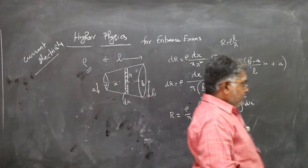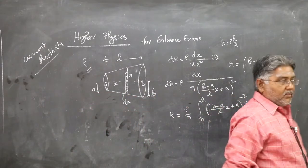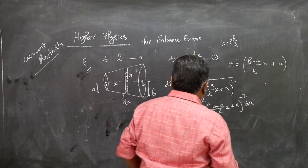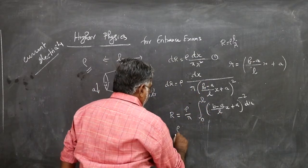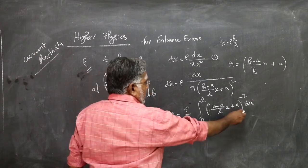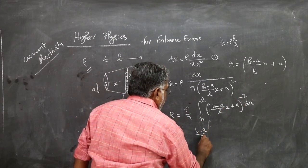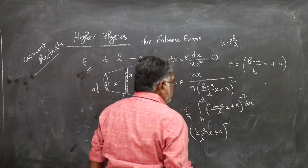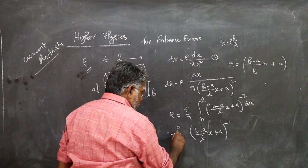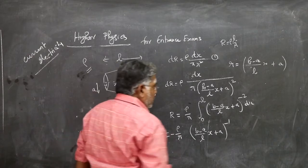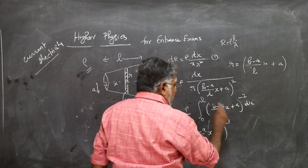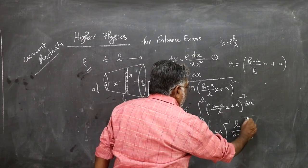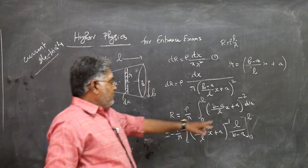What you can do for integrating: rho by pi, minus 2 is there, so (B minus A by L into x plus A) power minus 1 divide by minus 1. So that minus 1 I write as negative symbol here. Then divide by B minus A by L, so L by B minus A, 0 to L. We will have to divide by the coefficient of x.